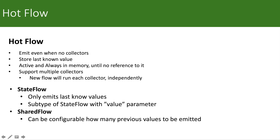Store the last known value. State flow also extends shared flow — shared flow is the superclass; state flow is an advanced version built on top of it. Shared flow can be configured with a buffer of values. Last known values behavior is specific to state flow. In state flow, you only emit the last known value and it has a value parameter. In shared flow, you can configure how many previous values can be emitted — the number of buffered values is configurable in shared flow.